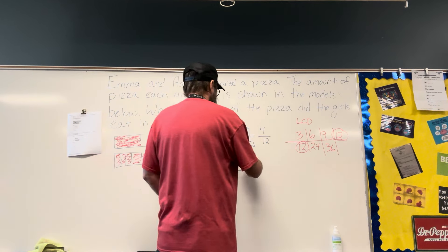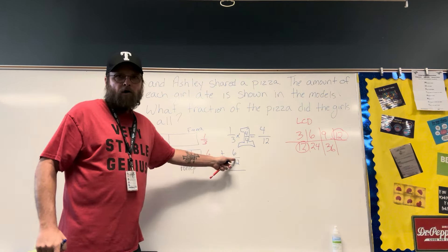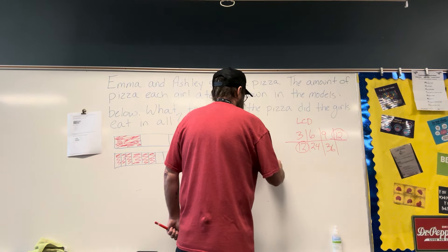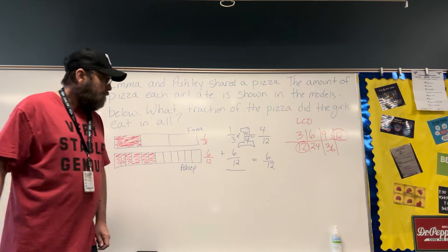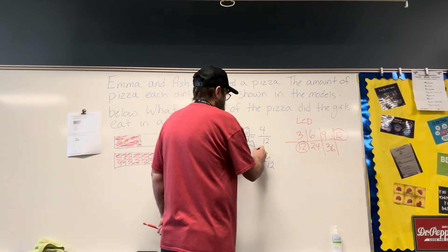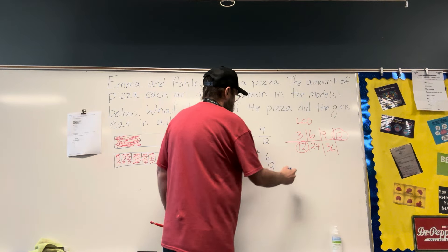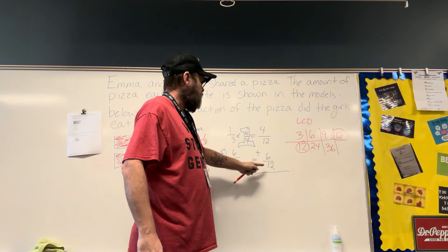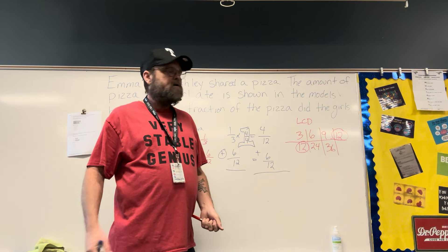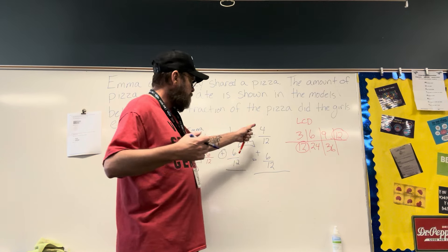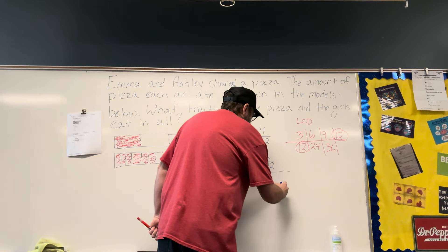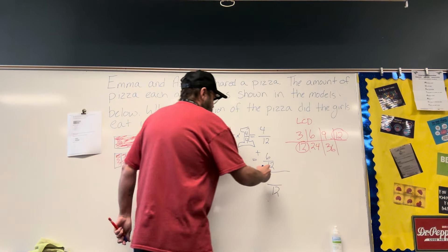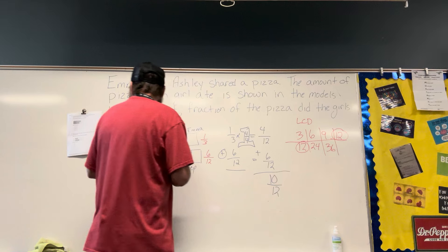So 1-third is equivalent to 4-twelfths. 6-twelfths is already over 12, so I'm just going to leave 6-twelfths as it is. I go back and always check my sign to make sure I'm doing the right operation. I have 4-twelfths plus 6-twelfths. When adding or subtracting fractions, you only change the numerators — you leave the denominator the same. 4 plus 6 is 10, so 10-twelfths.